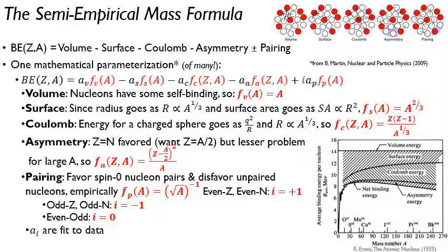And the contributions look something like this. So this is a really nice plot from Robley Evans from a long time ago. So you have the average binding energy per nucleon versus mass number. And you can see basically the consequences of this semi-empirical mass formula. So you start out with some bulk binding from the volume. You get a penalty from the surface.